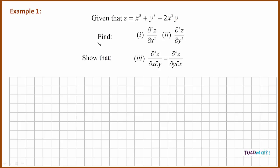So let's have a look at an example. Here we're given a function z that depends on two variables x and y, and we're asked to find the second-order partial derivative d²z/dx² and the second-order partial derivative d²z/dy². We're also asked to show that d²z/dx·dy is equal to d²z/dy·dx.